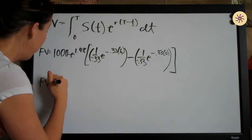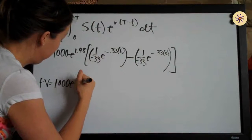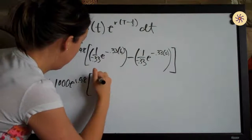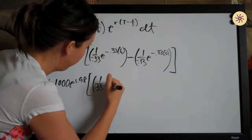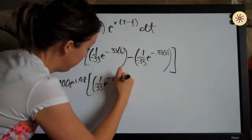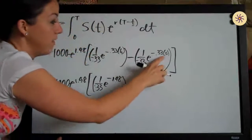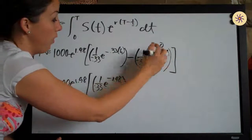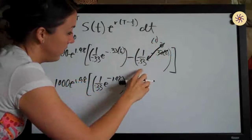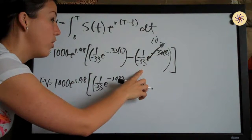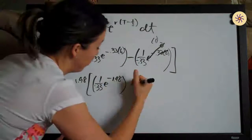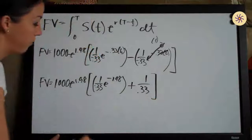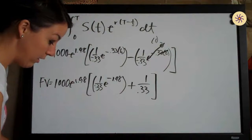To simplify: the first term gives one over negative point three three, times e to the negative one point nine eight. For the second term, negative point three three times zero is zero, and anything raised to the zero power is one, so e to the zero just becomes one — leaving us with one over negative point three three. Because we have minus a negative, this becomes plus one over point three three.